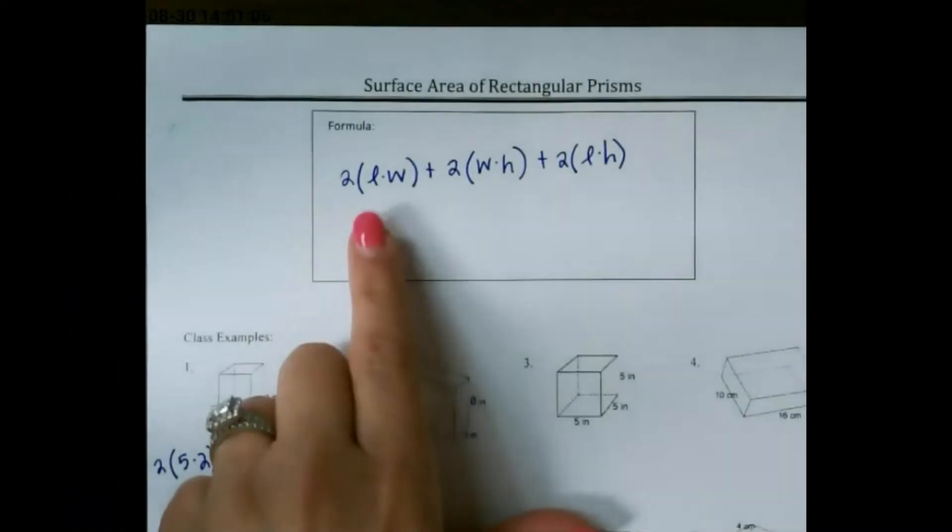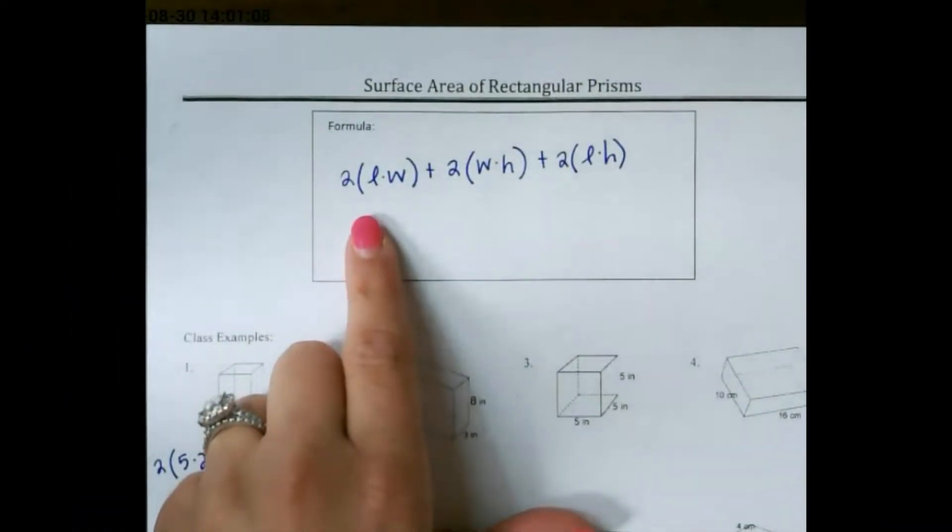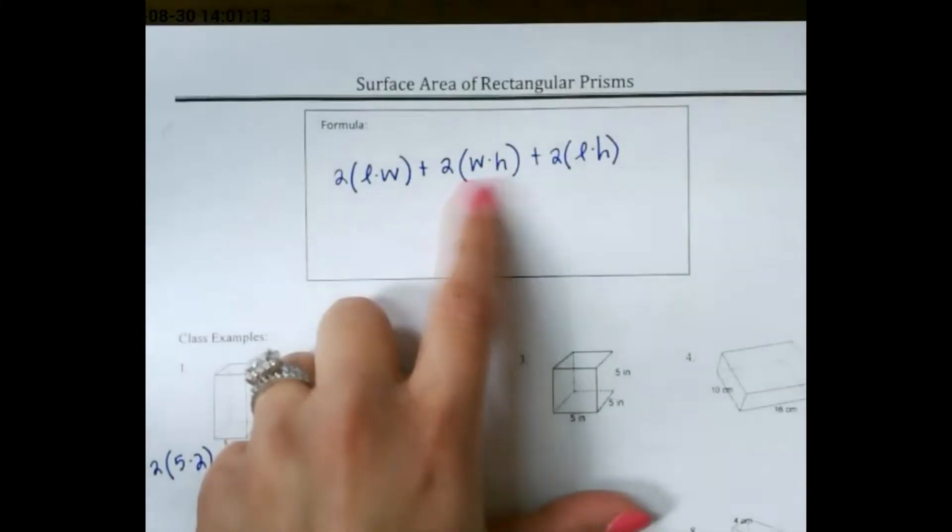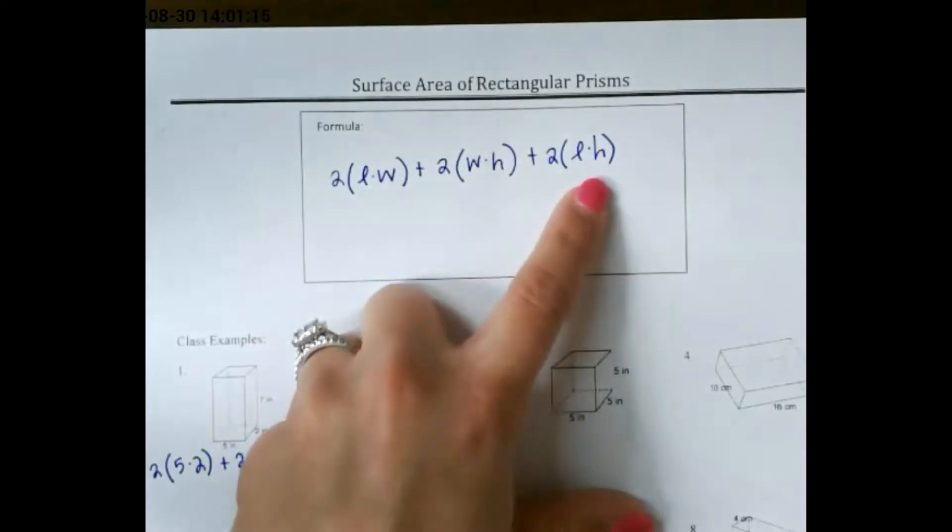Let's look at the formula for surface area of a rectangular prism and some examples. The formula is 2 length times width plus 2 width times height plus 2 length times height.